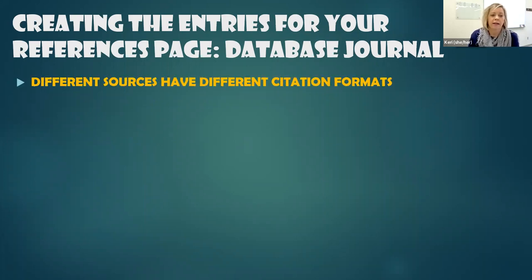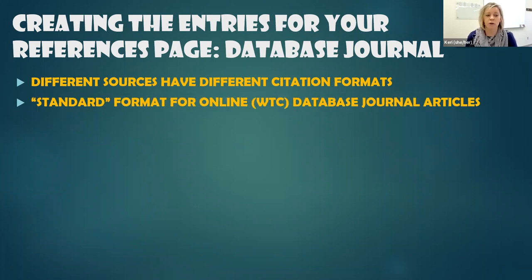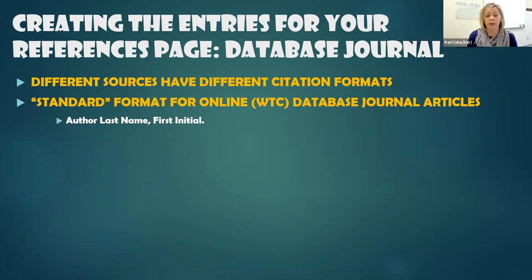Different sources have different citation formats in APA. So for an online database journal — like something that you would find in one of our Western databases — there are some key pieces of information that you'll be looking for.